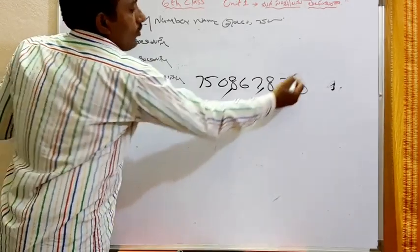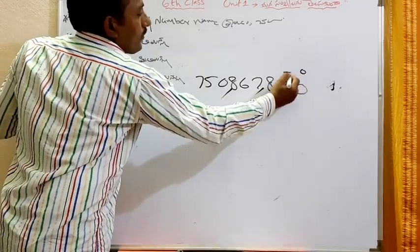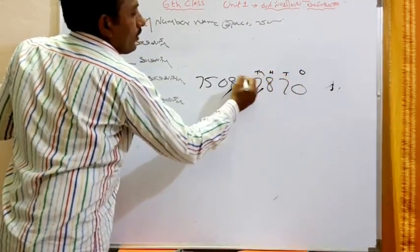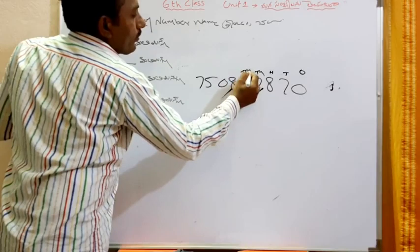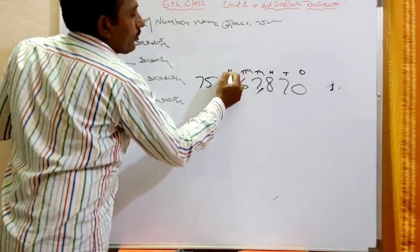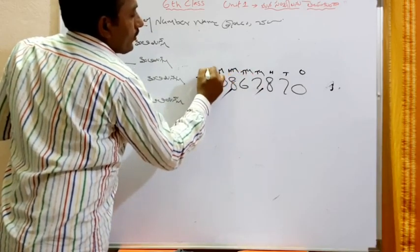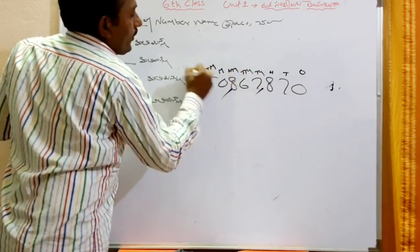Now places. Once, tens, hundred, thousand, ten thousand, hundred thousand, million, ten million, hundred million.